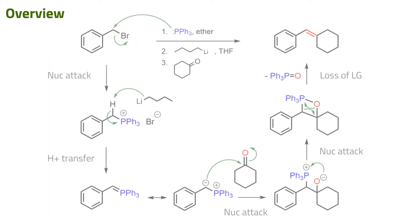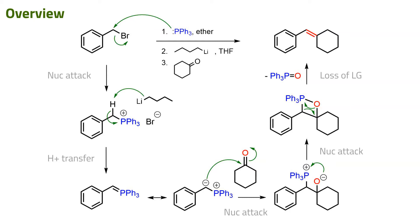The complete mechanism involves a phosphine displacing the leaving group on the alkyl halide to give a phosphonium salt, which is then deprotonated by a strong base to produce a phosphonium ylid. This nucleophilic species then adds to the carbonyl through a metathesis pathway to give the alkene and a phosphonium oxide byproduct.